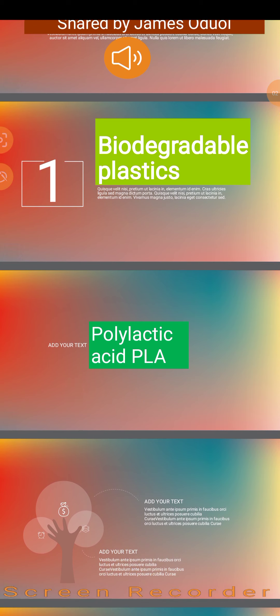Lactic acid is a byproduct of fermentation. When you ferment sugar under certain conditions, it could give you either ethanol or it could give you lactic acid. While producing lactic acid, you can create certain temperatures and conditions — including pressure — that could result in these lactic acid molecules binding together to form the polylactic acid molecule.